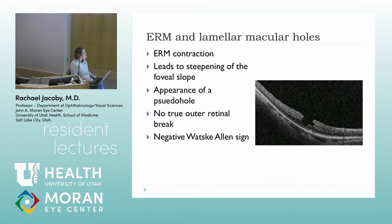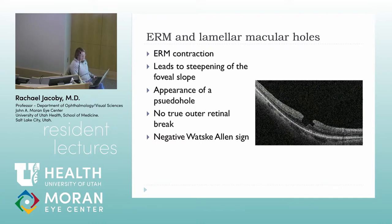One way to differentiate on exam is the Watzke-Allen sign. With the slit lamp using your 90 or 78 diopter lens, you hold a narrow slit beam over the hole or pseudo hole and ask the patient if they see a break in the beam. If they don't see a break, that's a negative Watzke-Allen sign indicating a pseudo hole. If they do see a break, it's a full thickness macular hole. Now you just do OCTs and don't need that test.